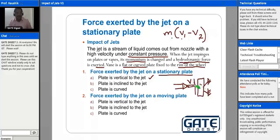Now the second case is plate is inclined to the jet. So stationary plate and it is inclined to the jet. So it is inclined to the jet means it makes certain angle theta with the blade.